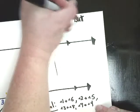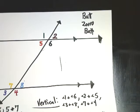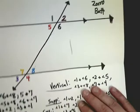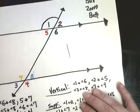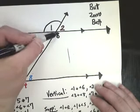Butt-Zorro-Butt is a simple way to figure out whether two angles from different crossings are supplementary or congruent. You can memorize that corresponding angles are congruent, same-side interiors are supplementary, alternate interiors are congruent, and so on — or you can just use Butt-Zorro-Butt. First, pick an angle at the top crossing and mark it.